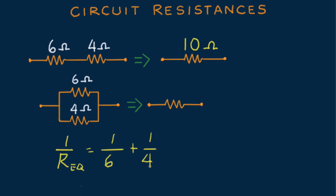But remember, for only two resistors in parallel, we can use the product over sum rule. Here we have 6 times 4, over 6 plus 4, we get 2.4 ohms, much less than the 10 ohms in series.